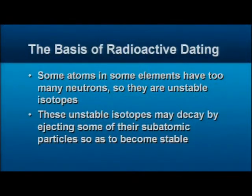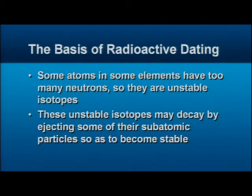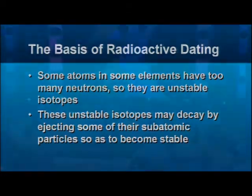Some atoms in some elements have too many neutrons in their nuclei, so they become unstable — there's not enough energy to hold all the particles together. Some of these unstable isotopes may decay by spitting out some of the particles held in the nucleus, to reduce their size and become more stable.